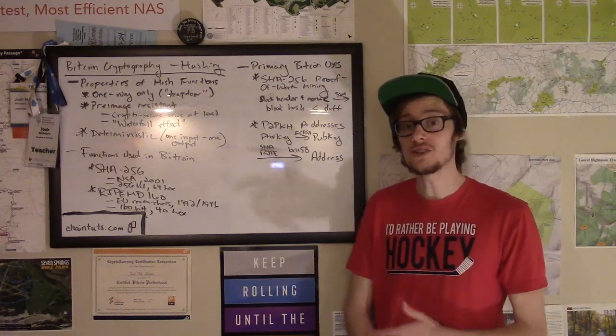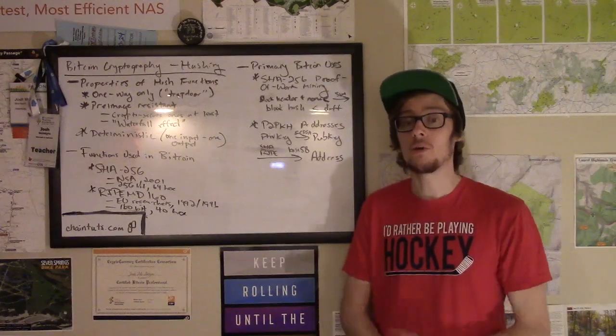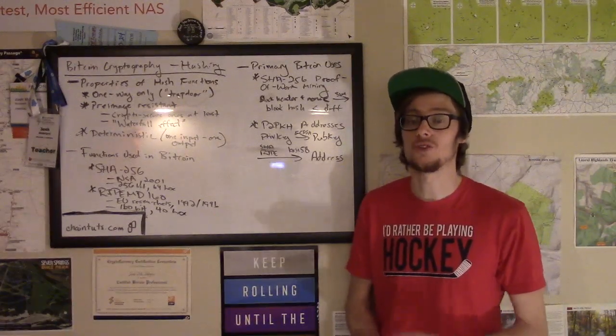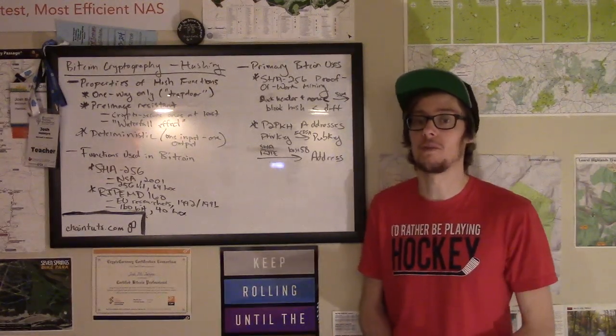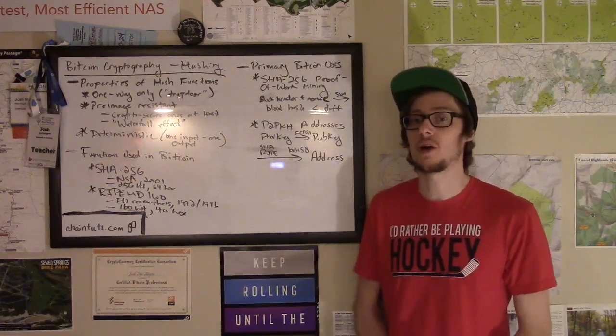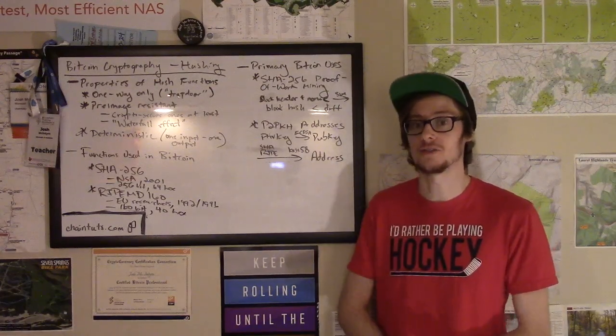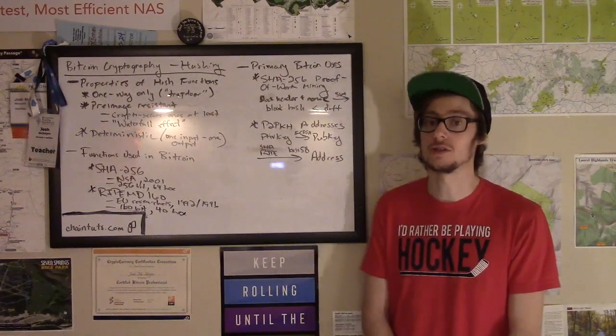So first, let's talk a little bit about the important properties of hash functions. We're going to talk about some properties that apply to all hash functions, like the ones that might be used in hash table data structures. But we're mostly going to be focusing on the particular properties of cryptographically secure hash functions that are used in applications like cryptocurrencies.